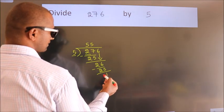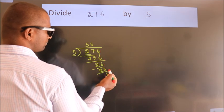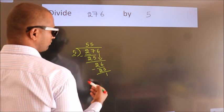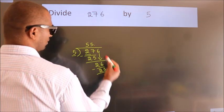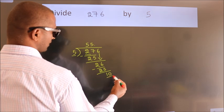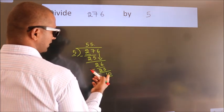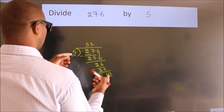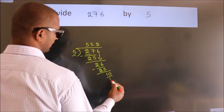After this, no more numbers to bring down. So what we do is, we put a dot and take 0. So, 10. When do we get 10 in the 5 table? 5 twos, 10.